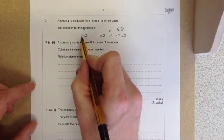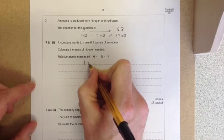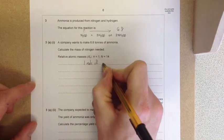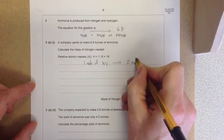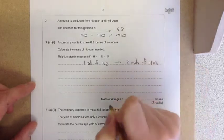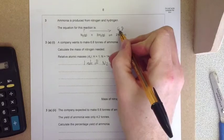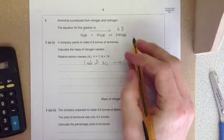You can see in the equation that you've got one mole of nitrogen reacts to produce two moles of ammonia. So what we need to work out is how many moles 6.8 tons produces of ammonia.